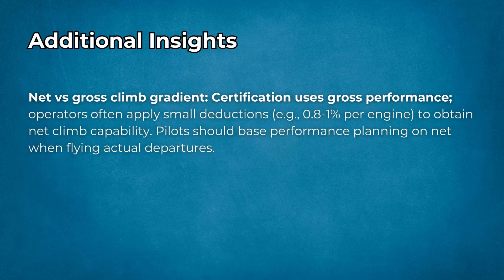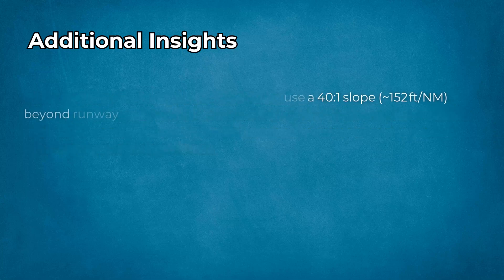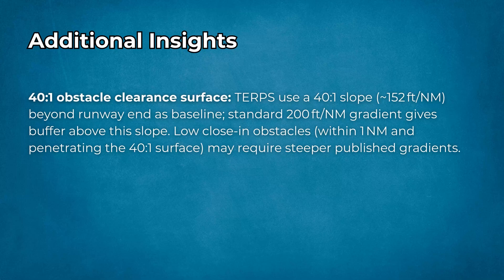Net versus gross climb gradient: certification uses gross performance, but operators often apply small deductions to obtain net climb capability. Pilots should base performance planning on net when flying actual departures. Regarding the 40 to 1 obstacle clearance surface: terminal instrument procedures use a 40 to 1 slope, approximately 152 feet per nautical mile beyond the runway end, as a baseline. The standard 200 feet per nautical mile gradient gives a buffer above this slope. Low close-in obstacles within one nautical mile that penetrate the 40 to 1 surface may require steeper published gradients.